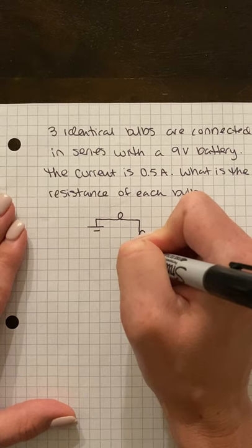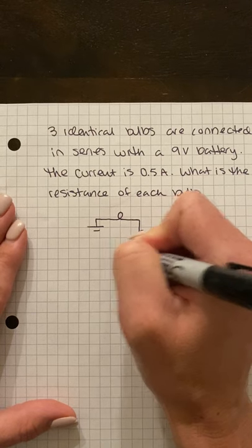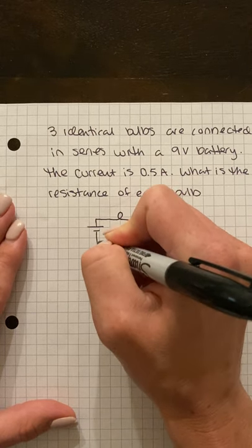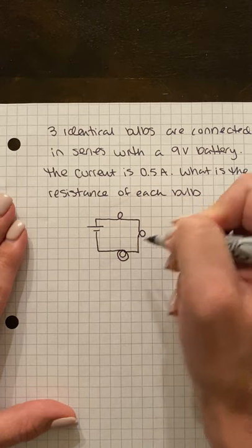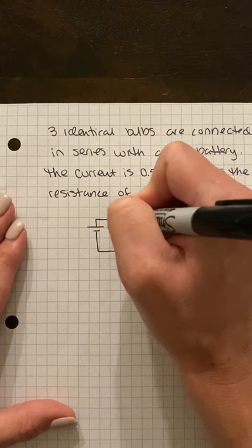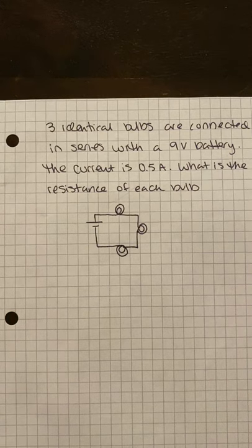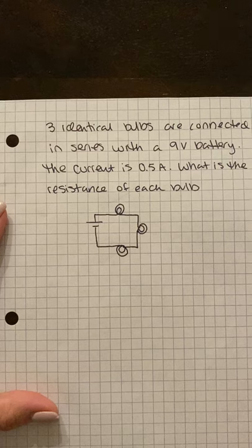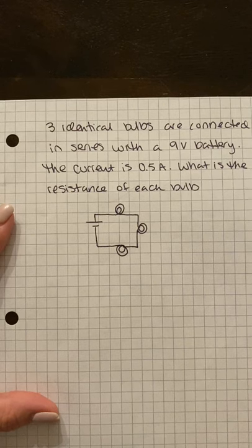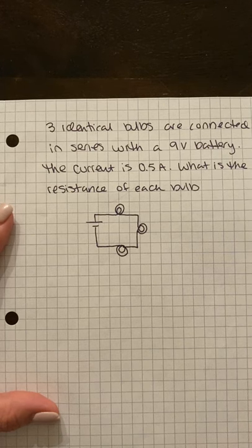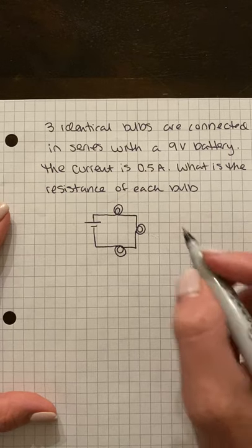Two, and it doesn't really matter where you draw them. There we go, here are my light bulbs. It's just a resistor. In fact, this is why we draw the little squiggly line for resistors, because drawing light bulbs is a little more difficult.